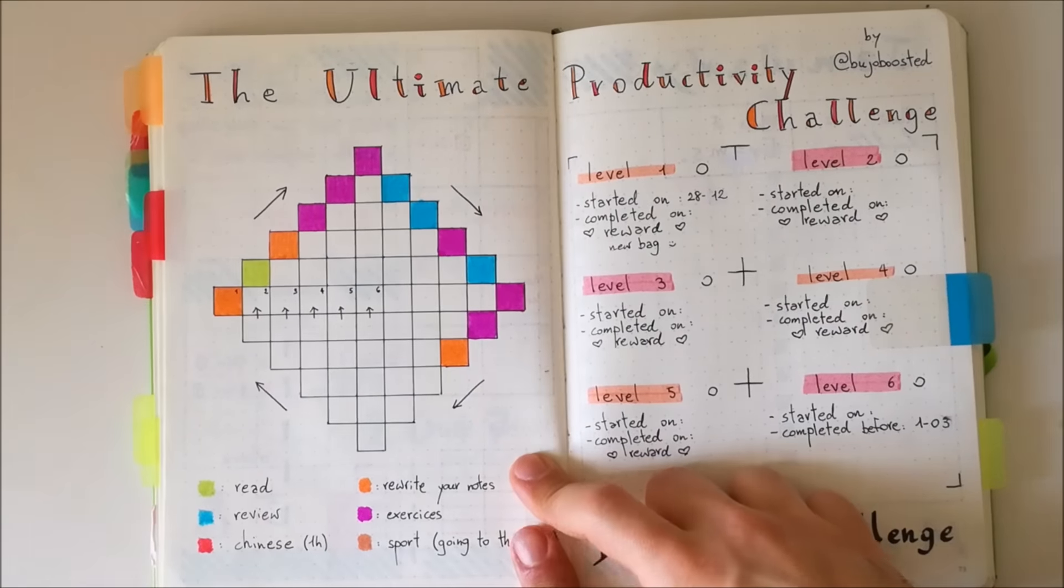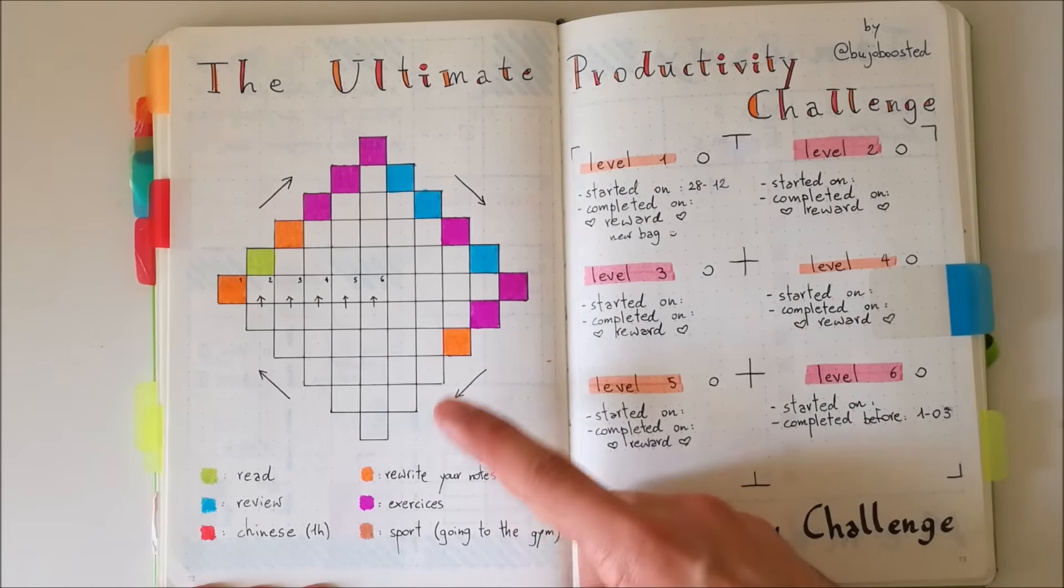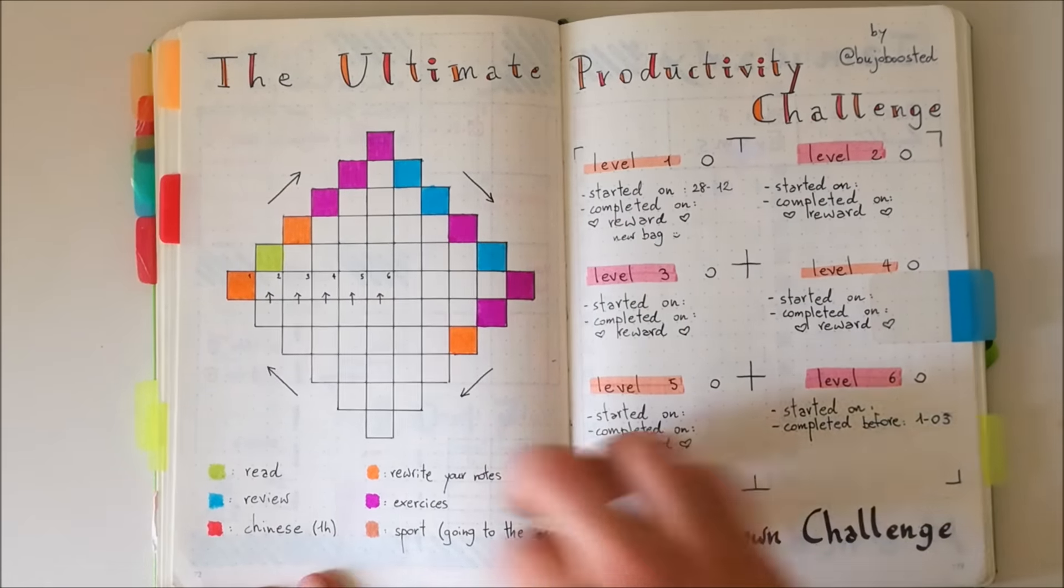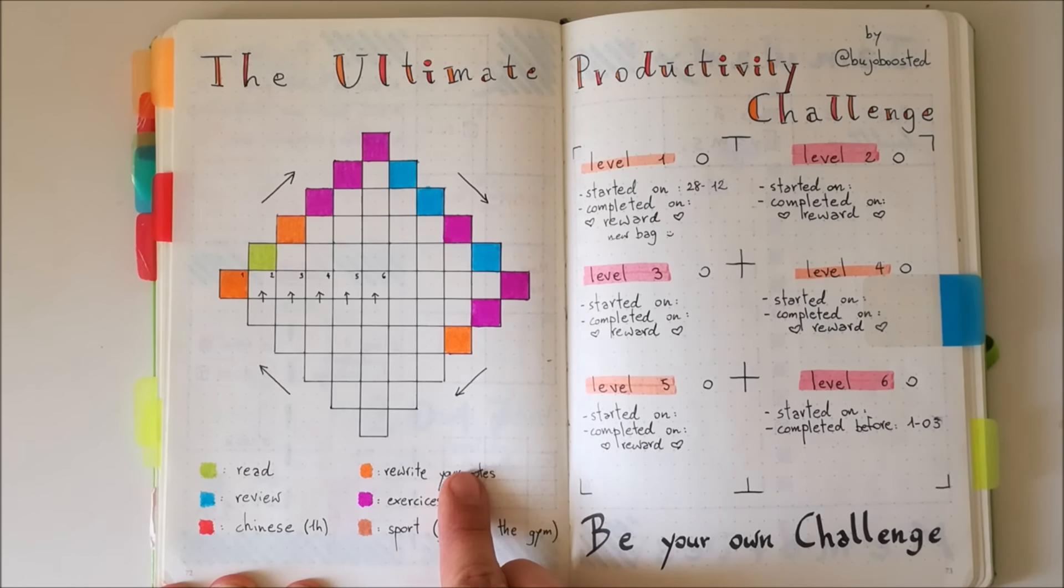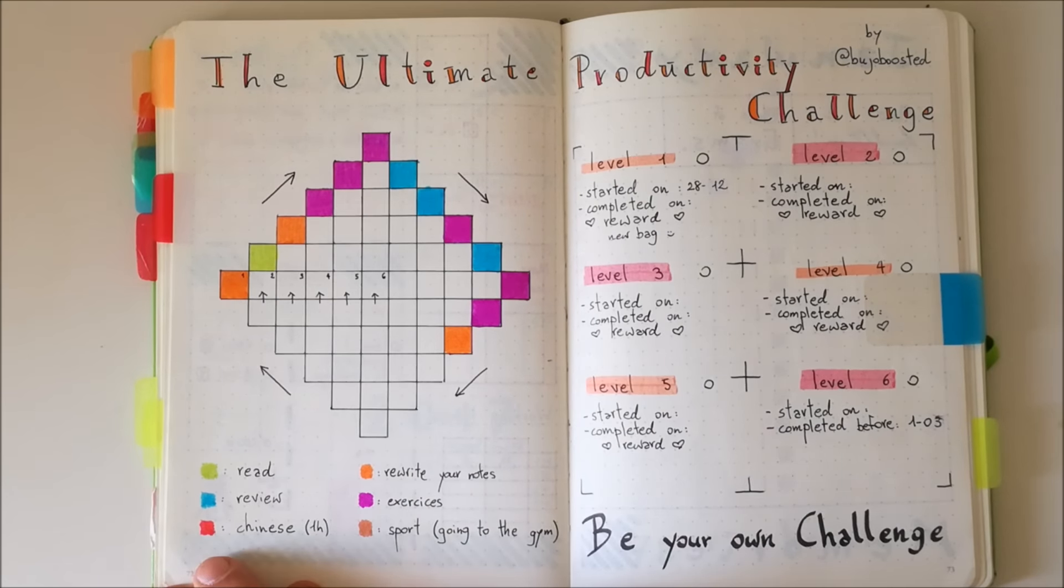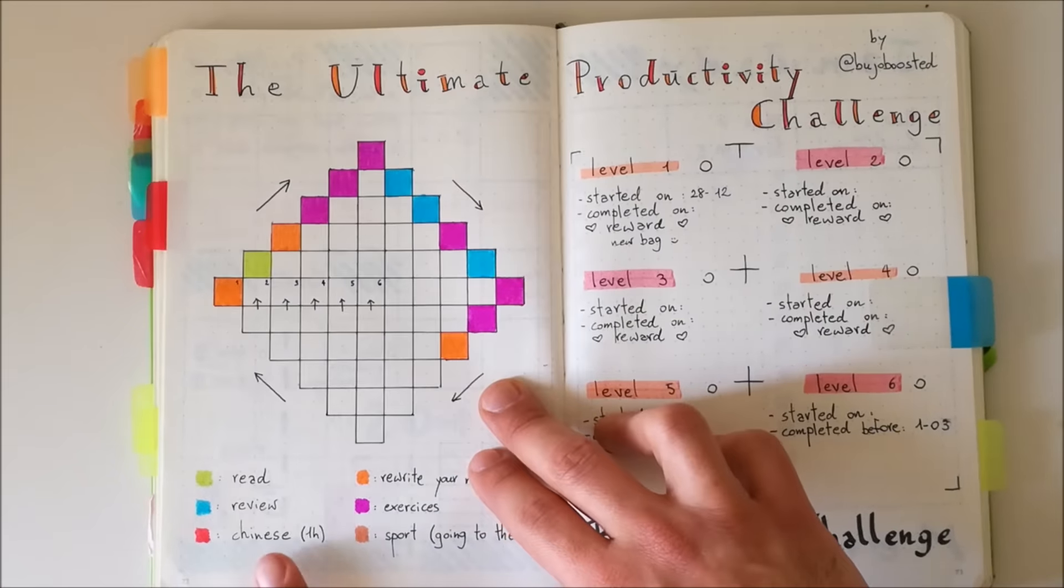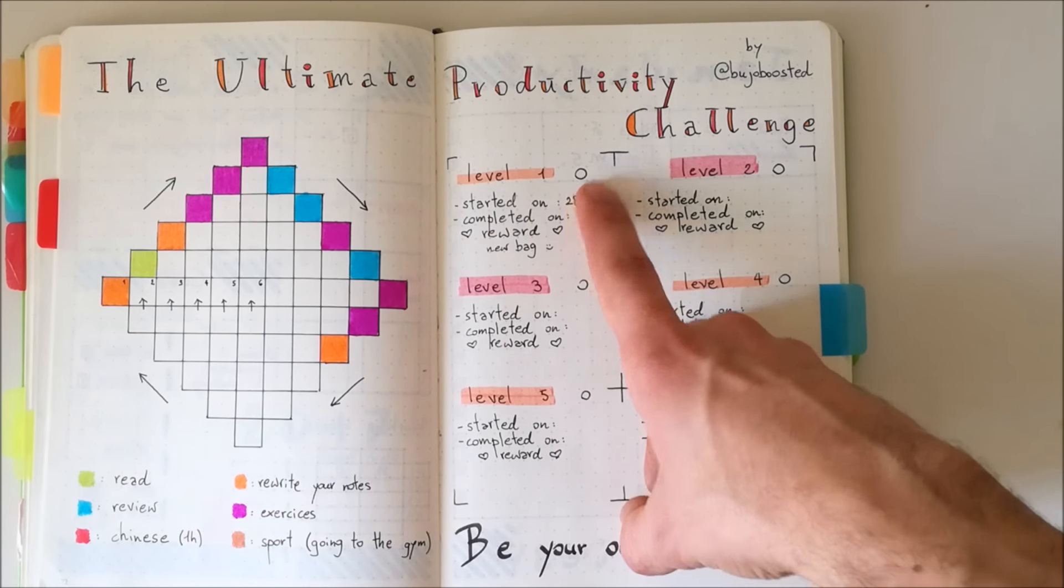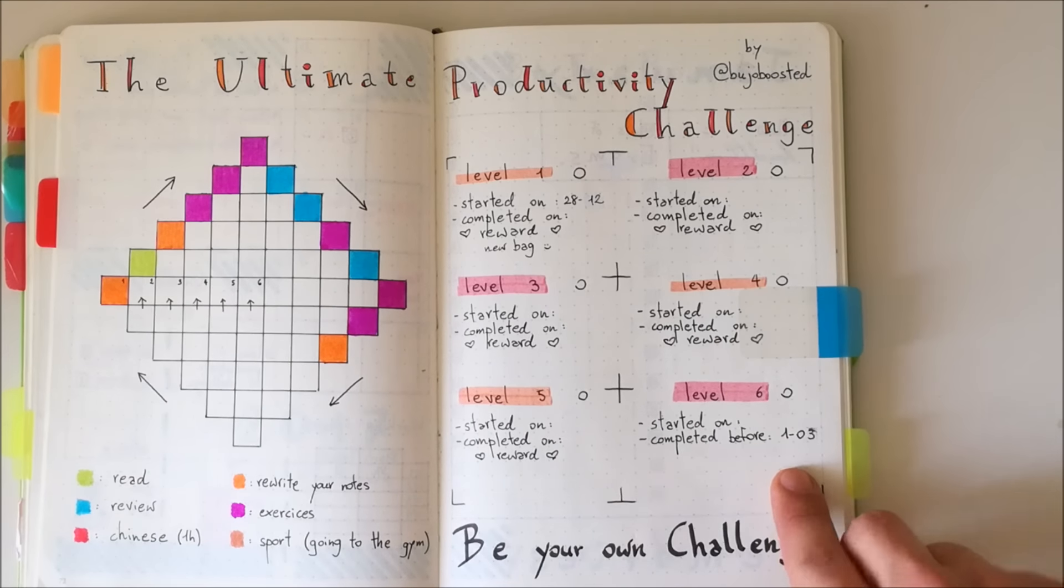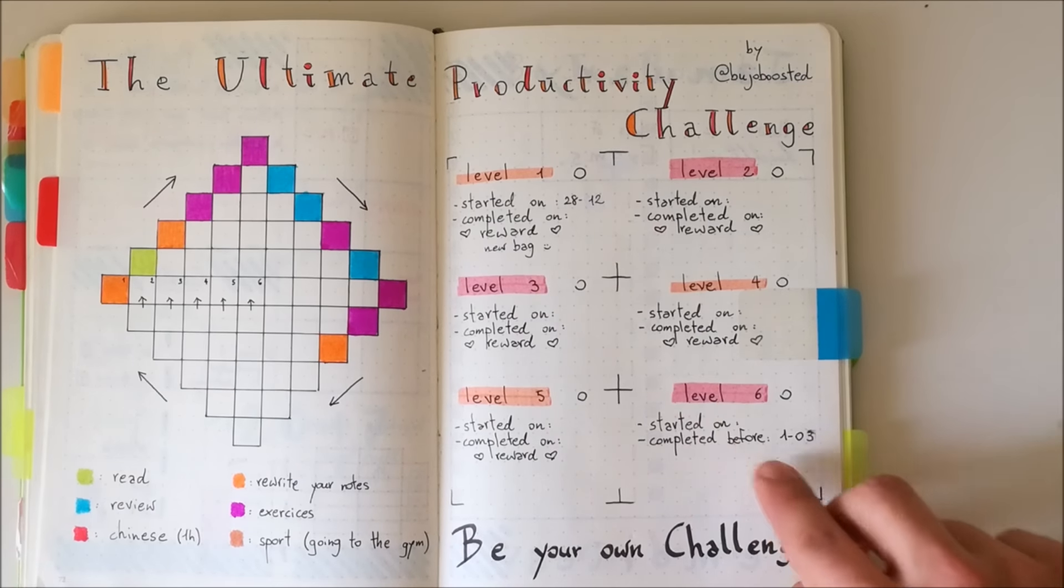Guys, this is my own personal ultimate productivity challenge. As you can see, I've gone through the first half of my level one. So I'm really happy about that. Here I'm going to focus a lot on studying and university. So that's why my productivity challenge is mostly based on university work that I need to get done. I have read and that's reading for university. Rewrite your notes, review exercises. That's mainly for math, for example, physics, one hour of Chinese and a sport whenever you go to the gym. As you can see, I haven't had time to go to the gym or do some Chinese because I've been focusing a lot on my exams recently. But I started my level one on the 28th of January. The reward is to get a new bag for school because my backpack is tearing apart. So I need a new one. And I have set my ending date for the 1st of March. So I commit myself to finish this challenge before that date. So remember, if you do set your own ultimate productivity challenge up, remember to use the hashtag BujoBoostedChallenge so that I can see your spread and the community can see your challenge.